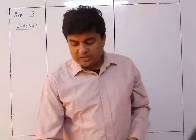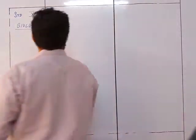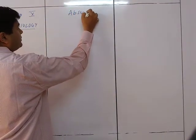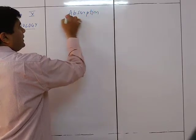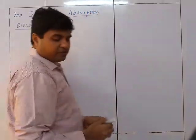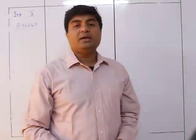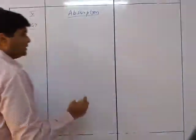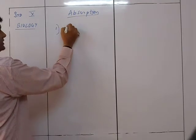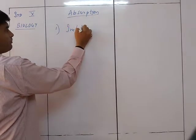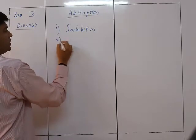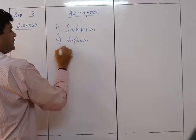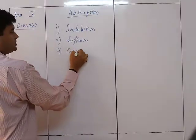We will continue with our chapter of biology on absorption. In the previous videos, you have seen that the plant absorbs water in the form of: first, imbibition; the next method was diffusion; and the third method was osmosis.